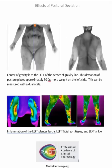The center of gravity is to the left. This deviation of posture places approximately 50 pounds more weight on the left side when measured with a dual scale. In this case with this much deviation, anywhere from 25 to 50 pounds of deviation with more pressure on the left side.